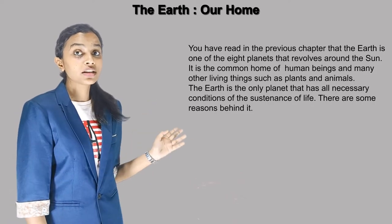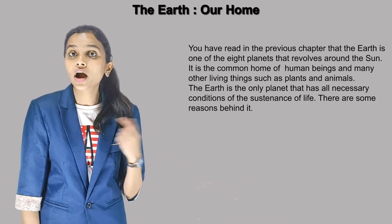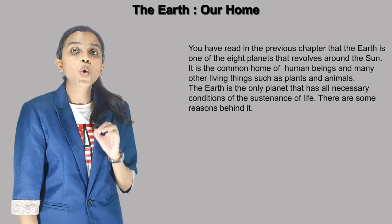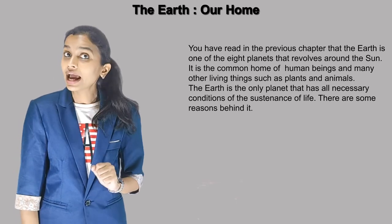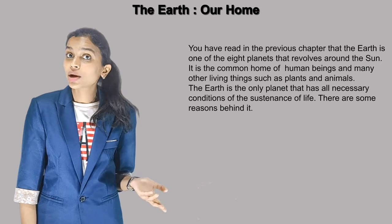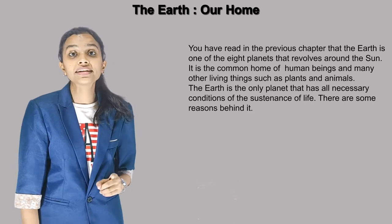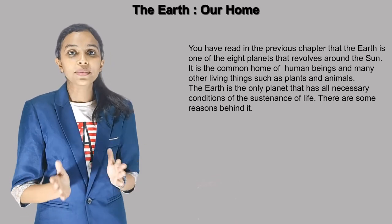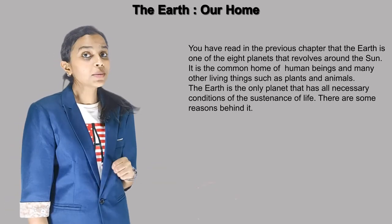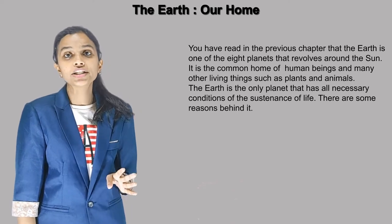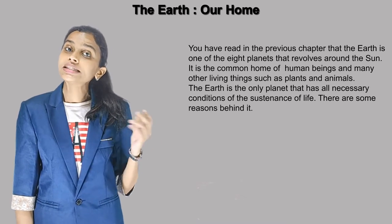You have read in the previous chapter that the earth is one of the eight planets that revolves around the sun. It is the common home of human beings and many other living things such as plants and animals. The earth is the only planet that has all necessary conditions for the sustenance of life.